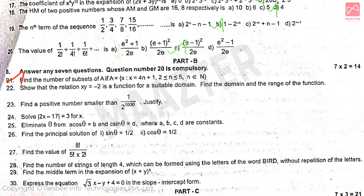Part B questions include: find the number of subsets; find the domain and range of a function; find a positive number smaller than (1/2)^1000; solve |2x − 17| = 3 for x; eliminate theta from a cos θ = B and c sin θ = D where A, B, C, D are constants; find the principal solution; find the value of 8! / (5! × 2!); find the number of strings of length 4 using letters of the word BAD without repetition; find the middle term in the expansion of (x + y)⁶; express √3x − y + 4 = 0 in slope-intercept form.